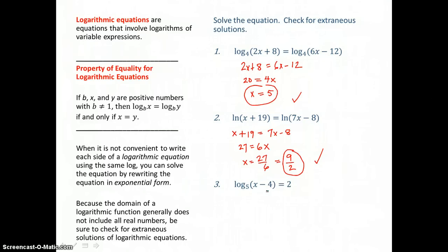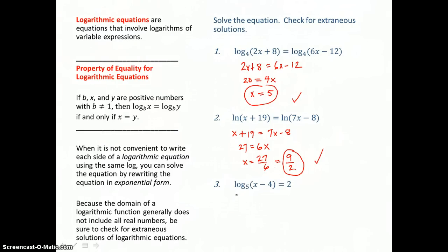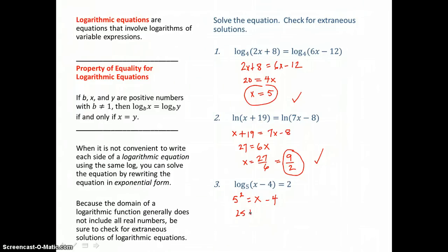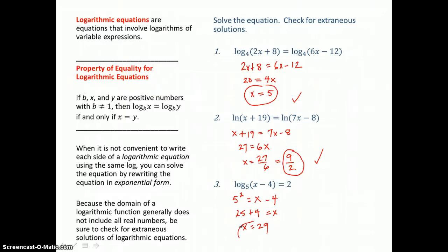In the third problem, we can't get the same log on both sides, so we go from logarithmic form to exponential form. Our base is 5, our exponent is 2, and that equals the number x minus 4. So 5 squared is 25, and adding 4 to both sides gives x equal to 29. Checking: 29 take away 4 is 25, the number part is positive, so it's a valid solution.